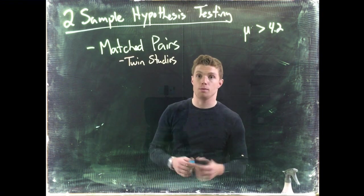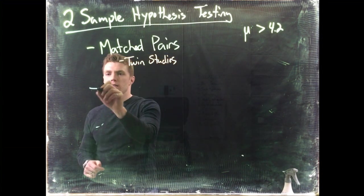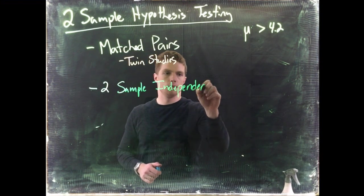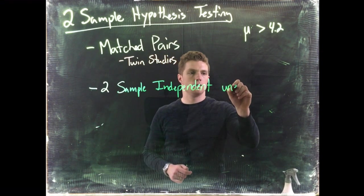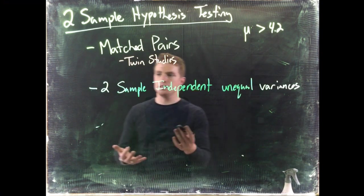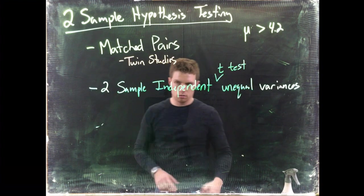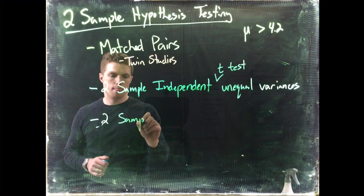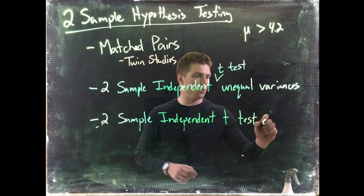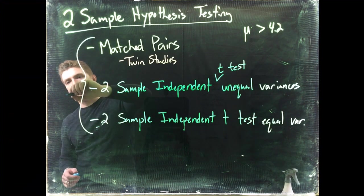When we can't do dependent sample testing, we do independent sample testing. The next test is a two-sample independent t-test with unequal variances. After that, we have a two-sample independent t-test with equal variances. These three — matched pairs, independent with unequal variances, and independent with equal variances — are all bracketed together because they deal with comparing means.